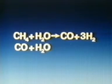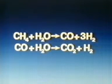The methane in the natural gas reacts with the steam to produce carbon monoxide and hydrogen. The carbon monoxide produced then also reacts with steam to give carbon dioxide and more hydrogen. The result is that we've now got hydrogen, which we need in order to make ammonia.